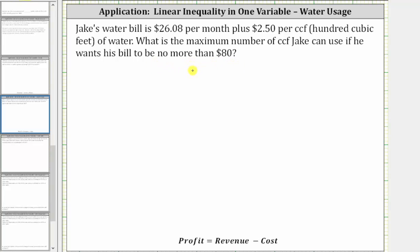Let's first let N equal the amount of water used in CCFs. The next step is to write an expression for the amount of Jake's water bill. The water bill consists of a flat fee of $26.08, which gives us 26.08, plus a fee for the amount of water used.